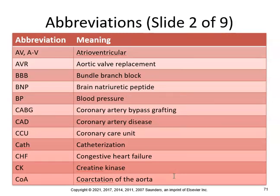More abbreviations: AV — atrioventricular; AVR — aortic valve replacement; BBB — bundle branch block; BNP — brain natriuretic peptide; BP — blood pressure; CABG — coronary artery bypass grafting; CAD — coronary artery disease; CCU — coronary care unit; cath — catheterization; CHF — congestive heart failure; CK — creatine kinase; COA — coarctation of the aorta.